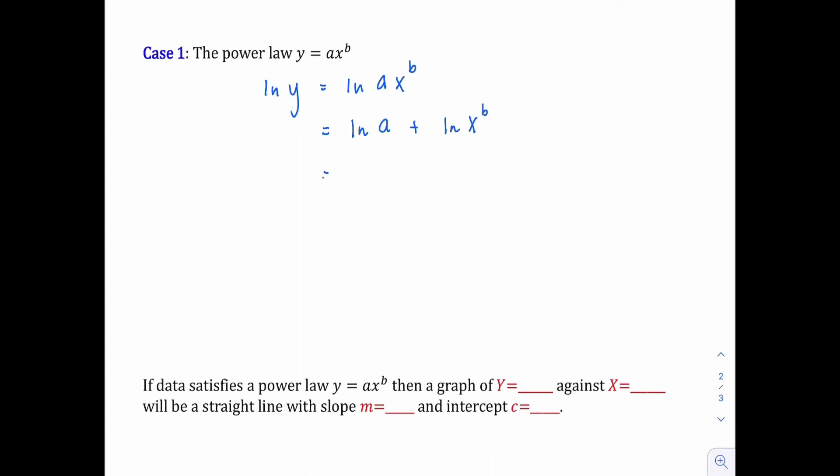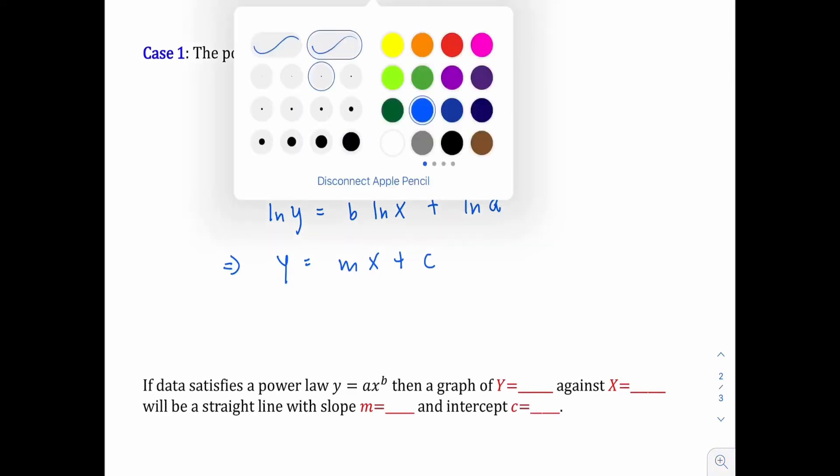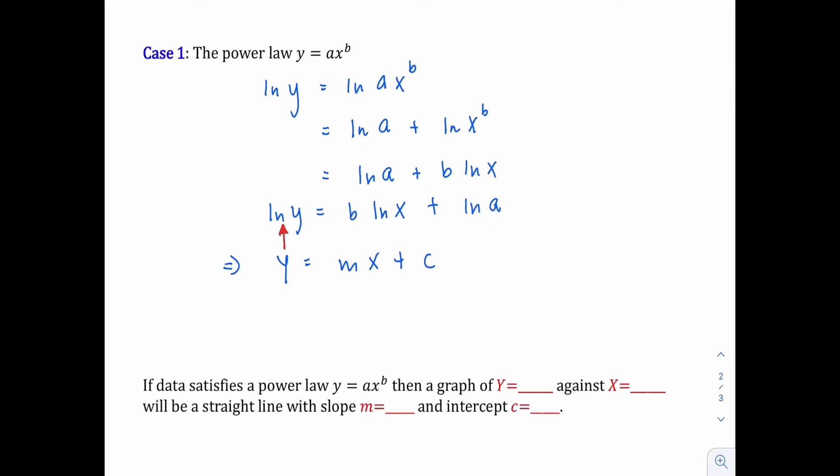And then for the power b here, you can actually bring it to the front. It becomes b ln x. Then what we need to do is just rearrange it and compare it to y equals mx plus c, which is the general form of a linear equation which we learned in AS. From here, you can see that ln y is the y-axis, ln x is the x-axis. As for the gradient, it becomes b, and for the y-intercept, it becomes ln a.